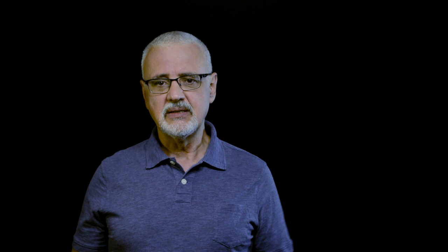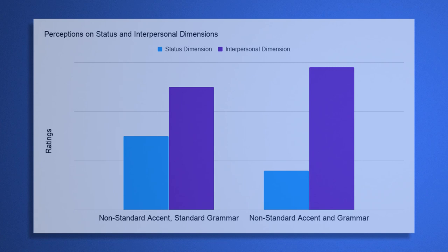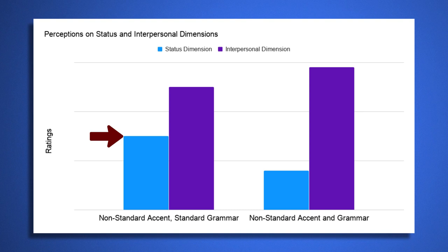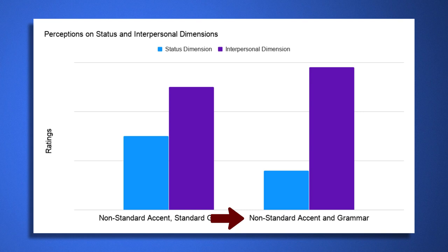Remember that we perceive not just phonological cues, but also syntactical and lexical cues — we're calling that standard and non-standard grammar in this video to keep it simple. So what perceptions do we have when the speaker has an accent but uses either standard or non-standard grammar? We see a difference in perceptions on the status dimension and on the interpersonal dimension. A speaker who uses non-standard grammar, in addition to a non-standard accent, gets rated even lower on status and even higher on the interpersonal dimension.